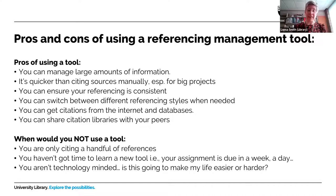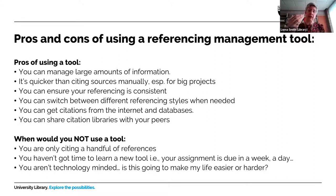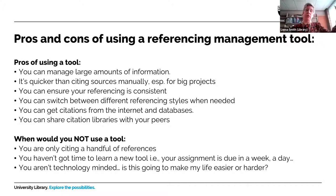It's quicker than citing things manually, especially for big projects such as your dissertation or thesis. You can ensure that your referencing is consistent — if you select a referencing style within these tools, all your references will have the same style, whereas doing it manually introduces the possibility of inconsistency. You can also switch between referencing styles as and when you need to. So depending on your course — for example, architecture at Newcastle uses multiple referencing styles such as MHRA and Harvard.